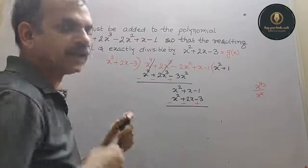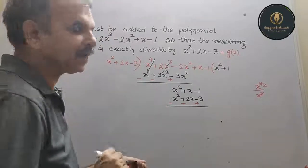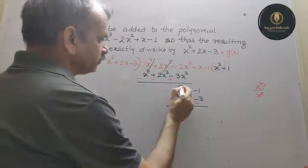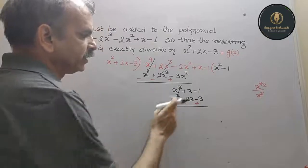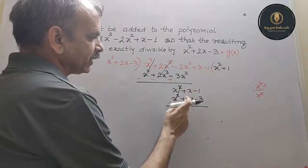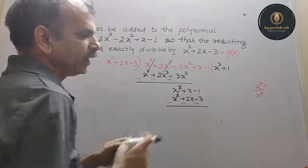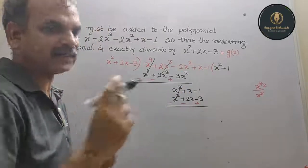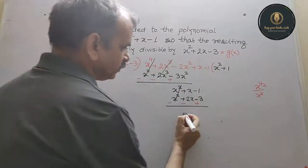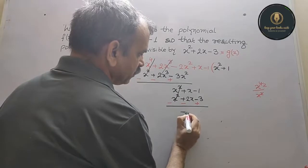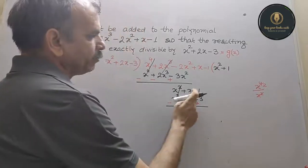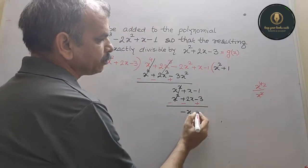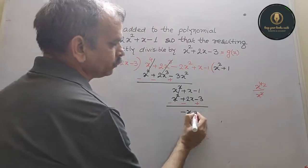Sign change applied. x² - x² cancels. Then x - 2x = -x. And -1 + 3 = +2. So the remainder is -x + 2.